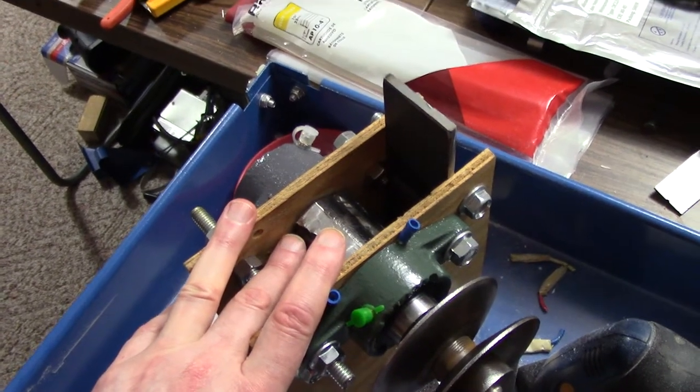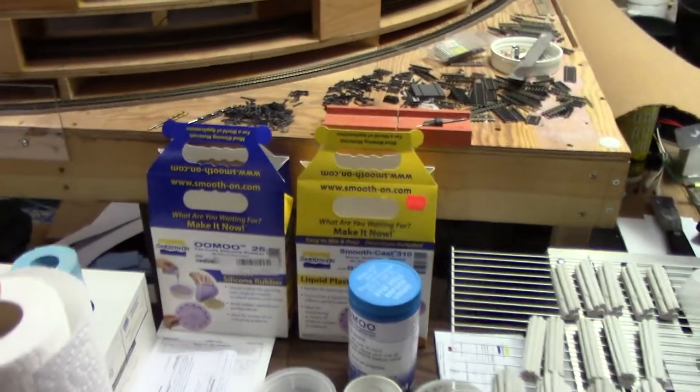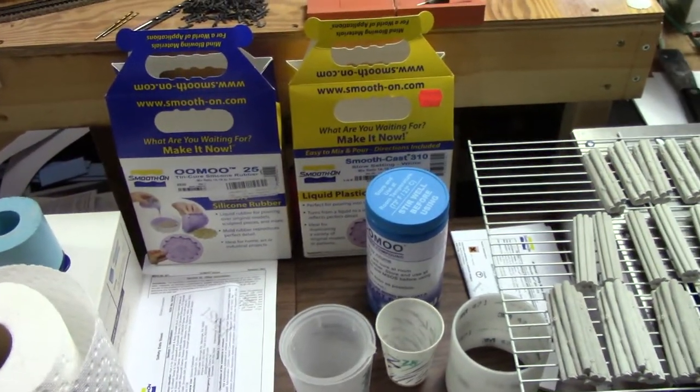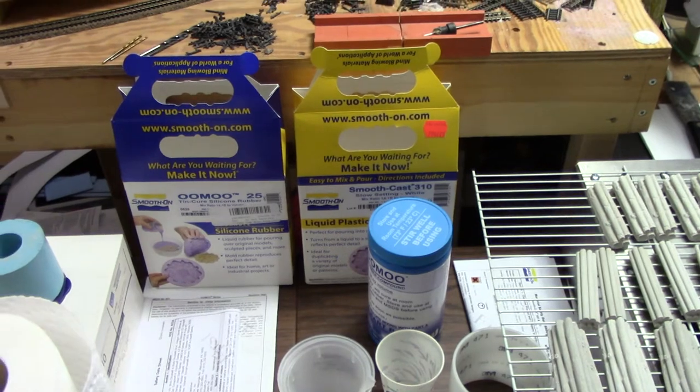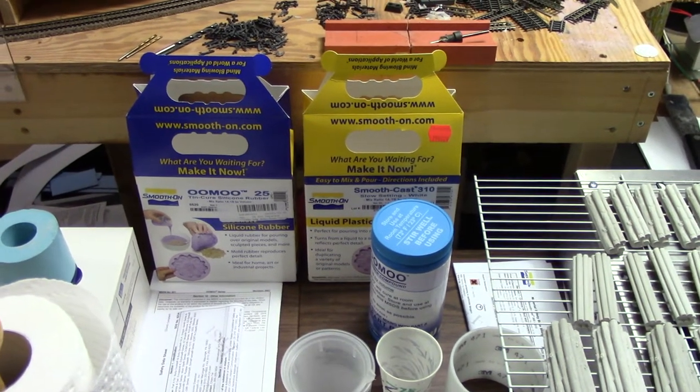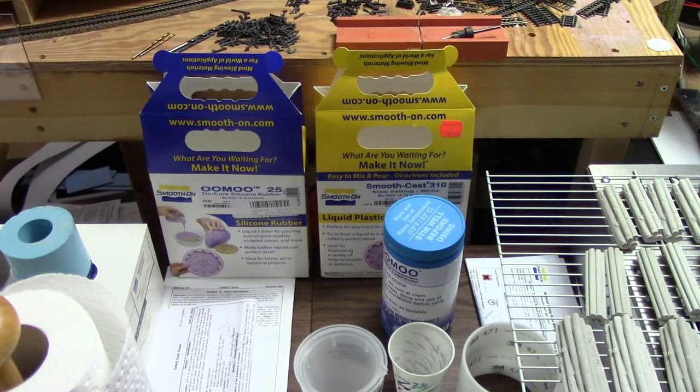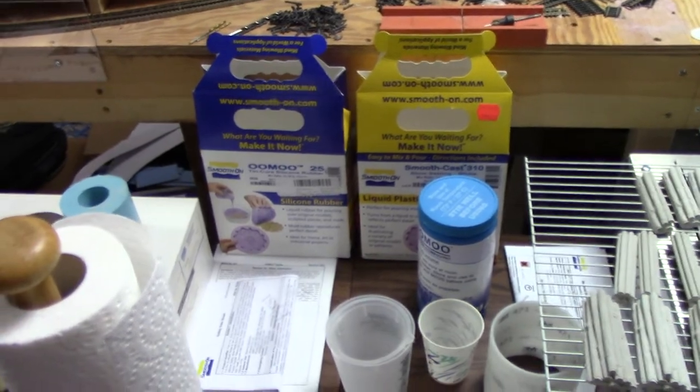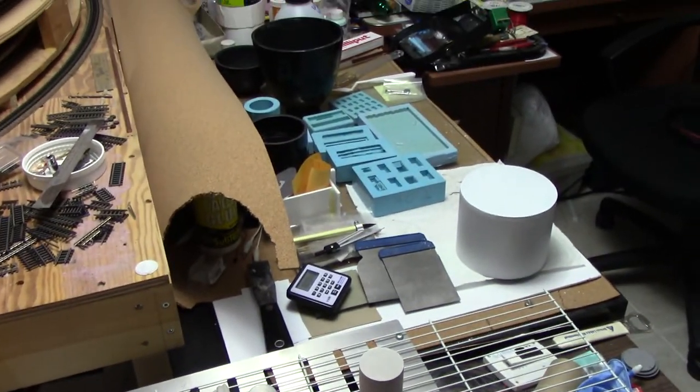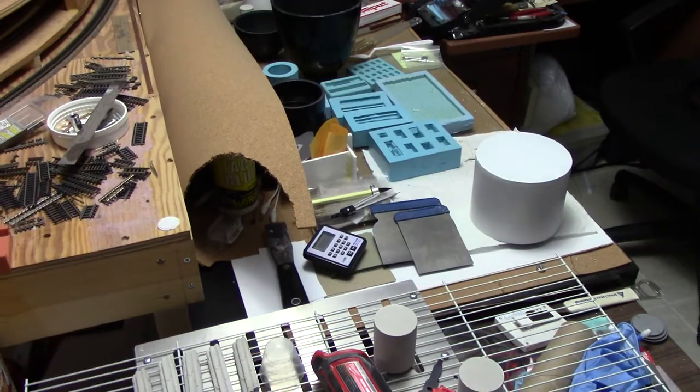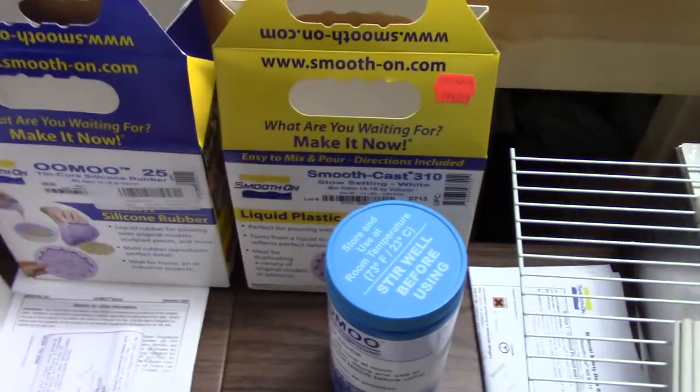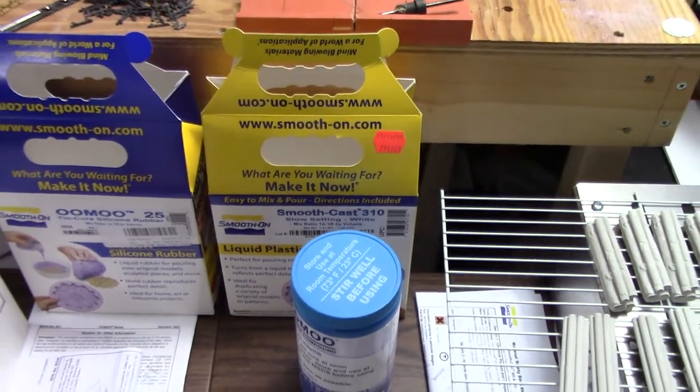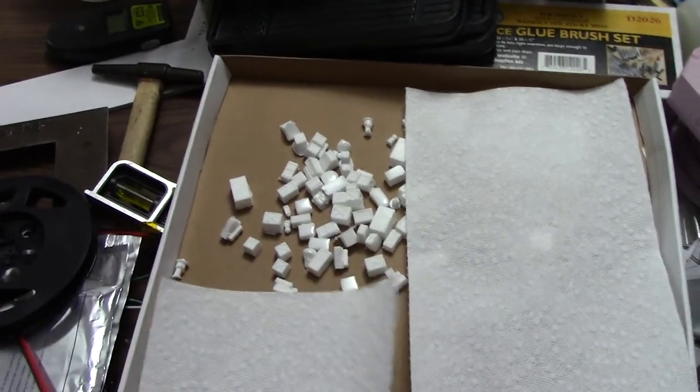Next project: I ended up having to use up the rest of the smooth cast 310 before everything went bad on me, which I've had happen before. Now the Omo 25 is what generates the silicone molds. The smooth cast 310 coming out of that box there is what generates these castings that you then make out of your silicone molds.